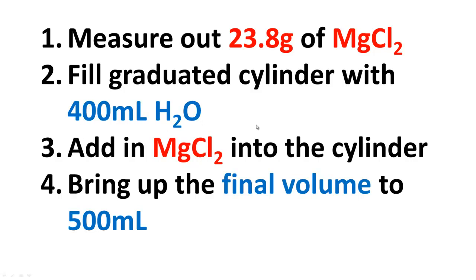And what you want to do is you want to mix the magnesium chloride into the 400 mL of water and then bring up the final volume to 500 mL. So that's an important part. You want to make sure the final volume is 500 mL. And that's how you properly get a 0.5 molar solution of magnesium chloride in 500 mL of final volume.